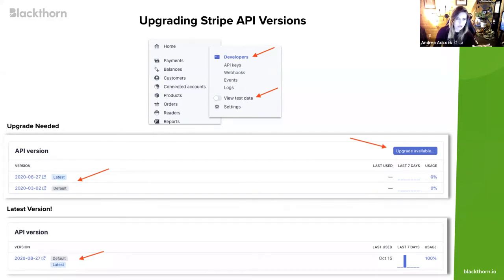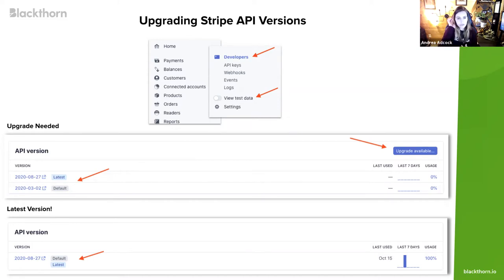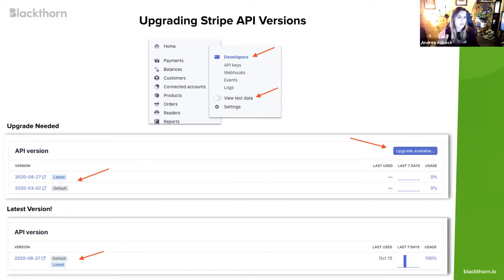Once you upgrade your API version in the Stripe dashboard, Stripe gives you a 72-hour window to roll back. I urge you to verify that any other direct Stripe integrations you have are compatible with the newest Stripe API version, because after that 72-hour window you cannot roll back. This was a major Stripe release with many non-backwards-compatible changes. We have a link to Stripe's API changelog in our release notes so you can review exactly what changed.